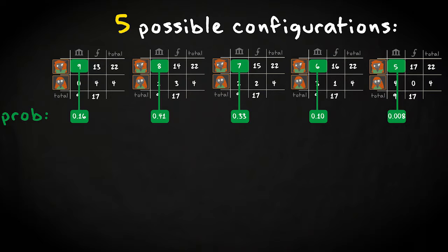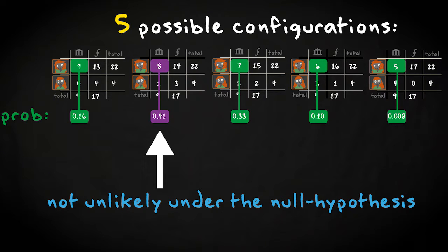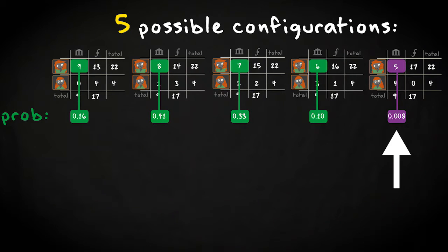And these are the probabilities for the 5 different configurations. Here is a more compact list where we show only the count in the upper left cell with the corresponding probabilities. Now the answer to our question is found by looking up how probable the particular count is that we got. A value of 8. It has a probability of 0.41. So the null hypothesis of independence is not rejected. As you can see, only in the case where the cell value would have been 5, we would have rejected the null hypothesis at the 5% significance level.